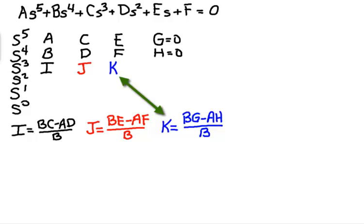Then calculate K, B times G minus A times H divided by B. There's a pattern here. If it's not obvious yet, it will be in a minute.